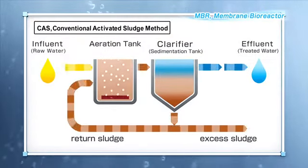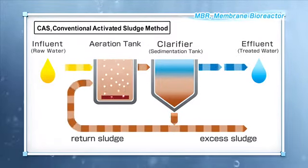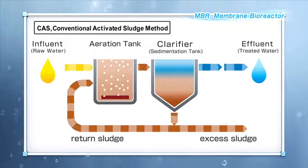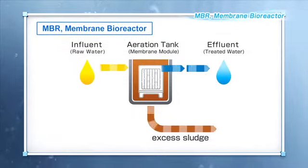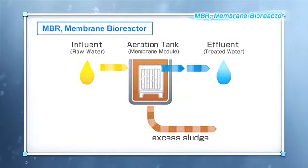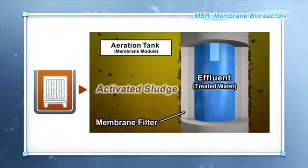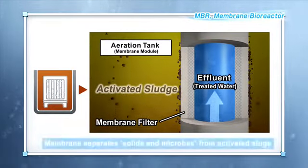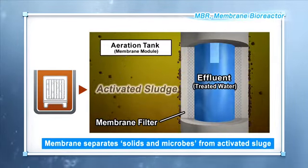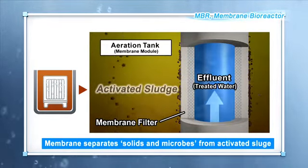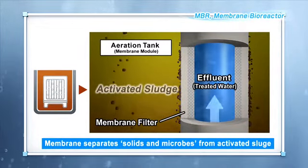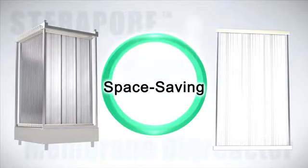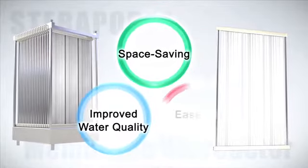In the conventional activated sludge method, sludge is separated into solids and liquids in a settling tank — this is called clarification. On the other hand, MBR separates activated sludge using a membrane module. MBR has a high level of water treatment capability, and combines membrane modules with the activated sludge method, making possible the recycling of water.